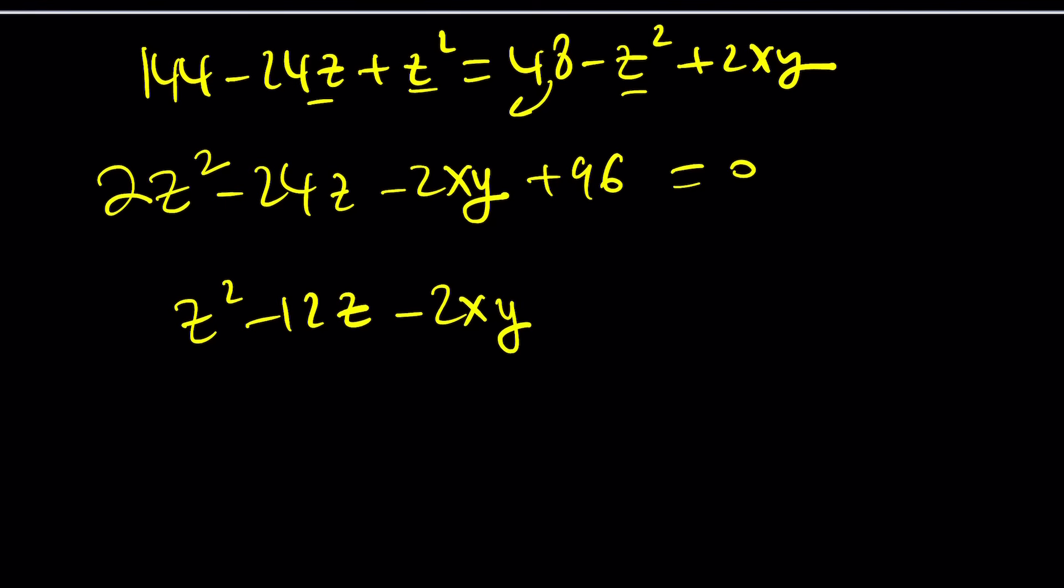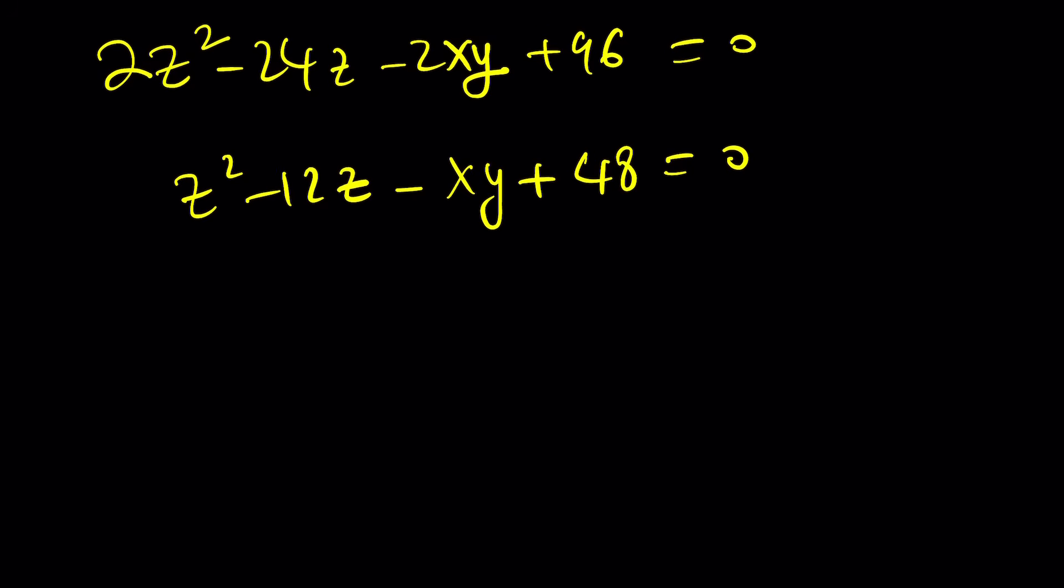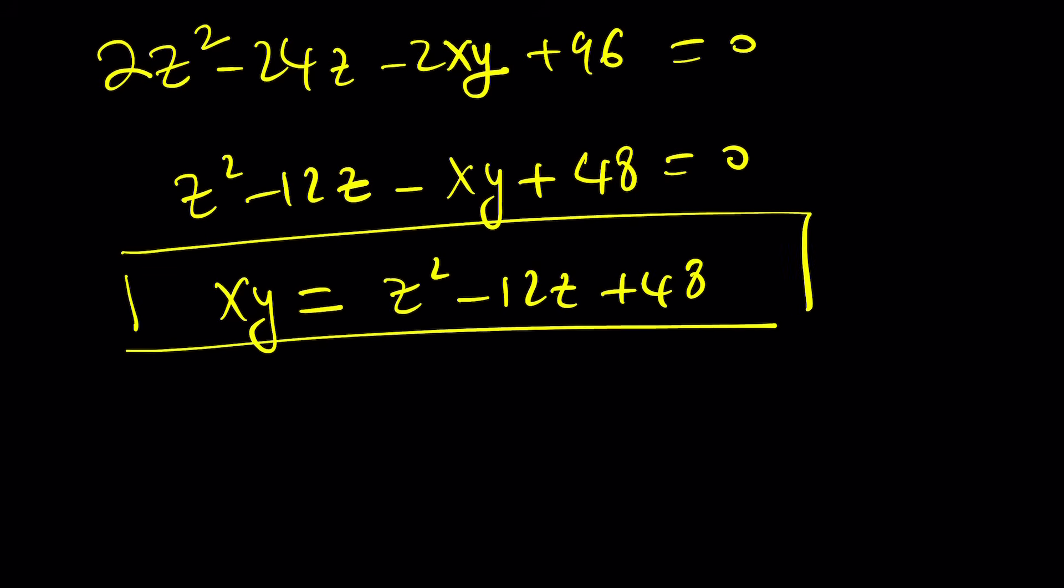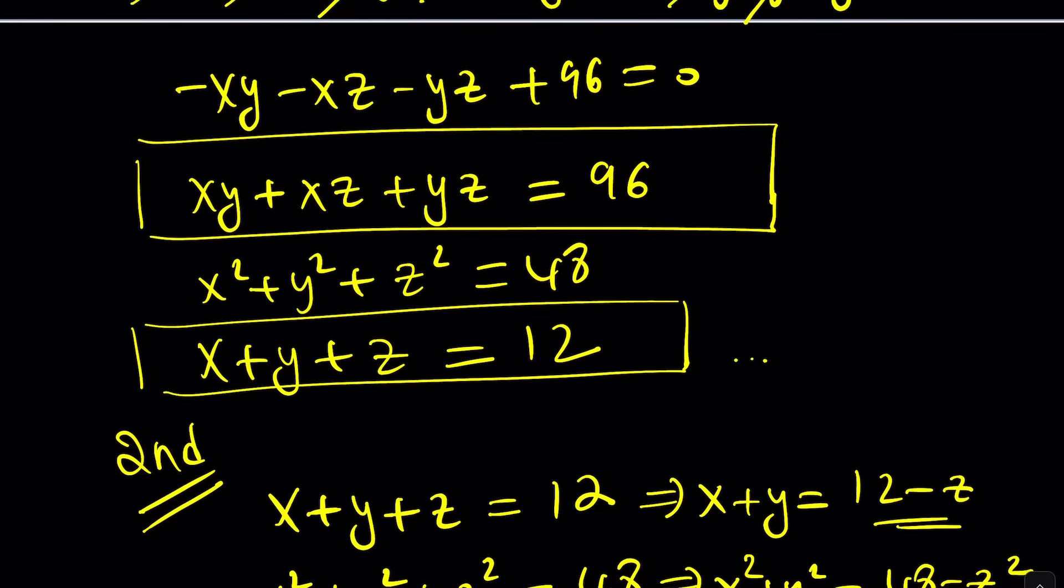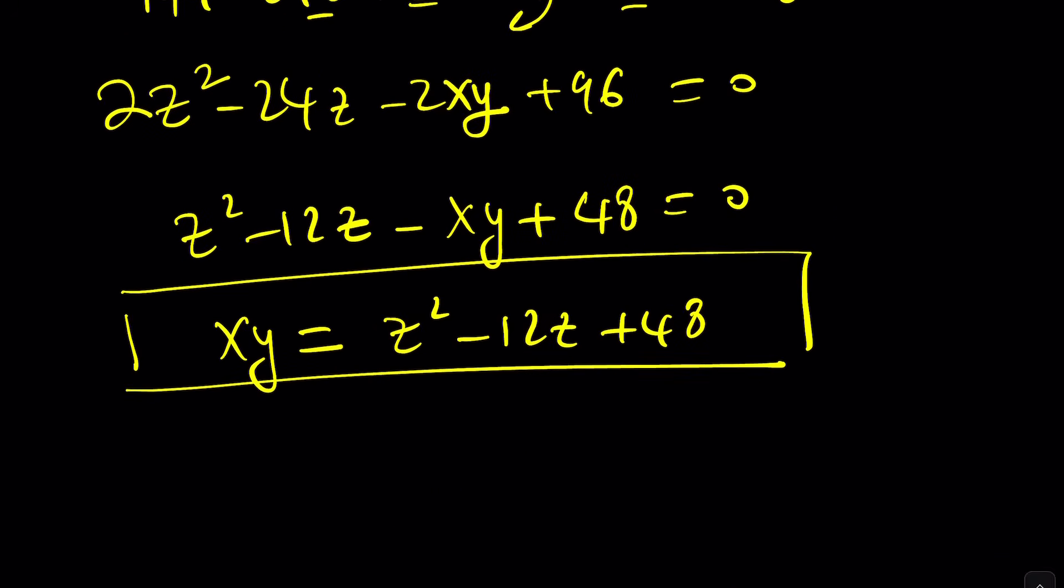So from here, that's supposed to be x, y only. You know what? I could probably just isolate x, y here. And I think this will be helpful for some reason. x, y is going to be z squared minus 12z plus 48. Now what can I do with this? Well, I do know that x plus y is equal to 12 minus z. Let's go ahead and copy that here. And x, y is equal to this. So from here, by using Vieta's formulas, I could probably set up a quadratic equation, can't I?